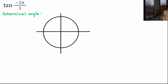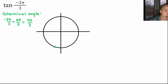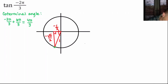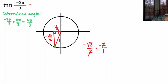Tangent of negative 2π/3. Starting with a negative angle, I add 2π: negative 2π/3 + 6π/3 = 4π/3. That's in the third quadrant. Draw a reference triangle and label the side lengths: hypotenuse 1, short leg 1/2, long leg √3/2. In the third quadrant, both x and y are negative, so both legs are negative. Tangent = opposite over adjacent = (negative √3/2) divided by (negative 1/2) = negative √3 times negative 2, which equals positive √3.